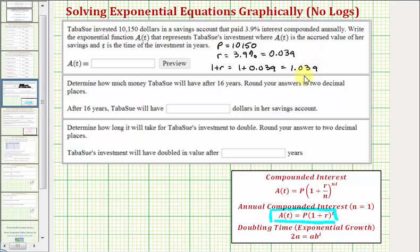This is all we need to write our formula for A(T). A(T) equals P, which is 10,150, times the base, which is the quantity one plus R, which is 1.039, raised to the power of T.